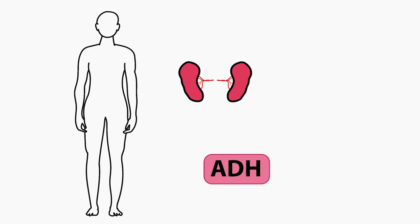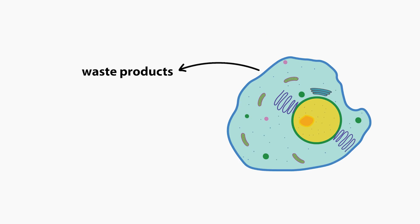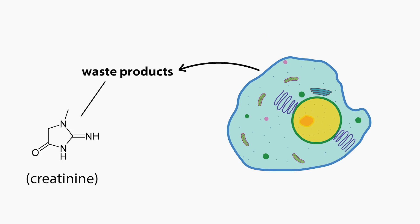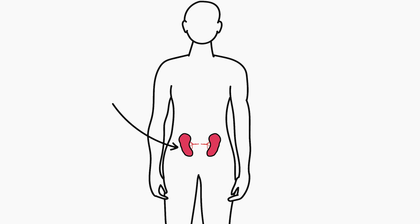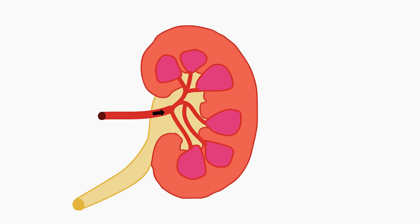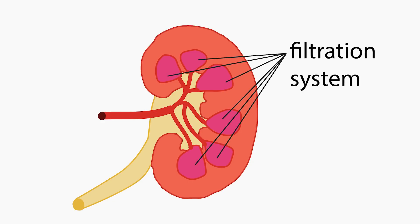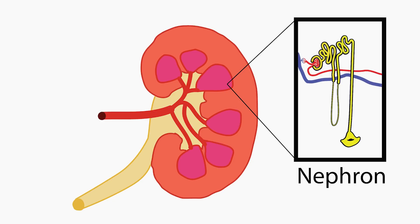ADH is responsible for telling your body to reabsorb water back into the body after the kidneys have filtered blood of waste products. Your cells make a lot of waste, like creatinine and urea, which are both toxic to the body. These waste products have to get removed, and your kidneys are the organ for the job. When blood flows through the kidneys, it passes through its filtration system, made up of a network of vessels called nephrons.